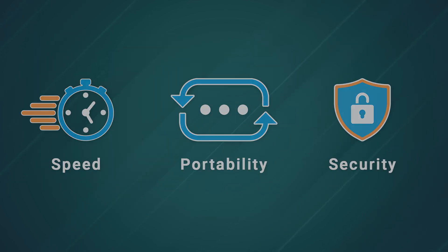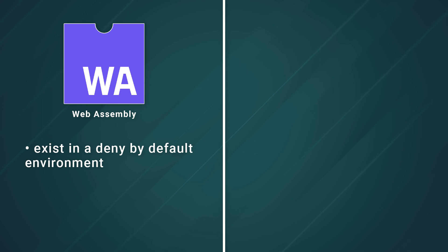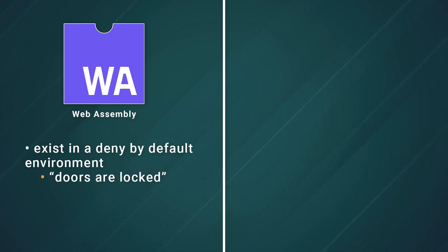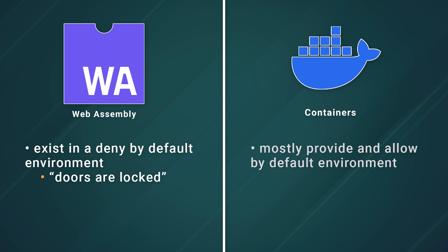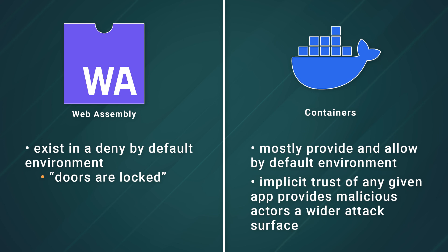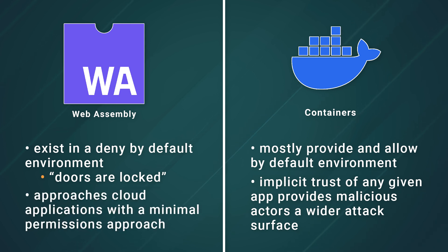Next is security. WebAssembly applications exist in a deny-by-default environment, sandboxed from the wider system and other applications. The doors are locked, and each door is only unlocked when access is explicitly granted. This differs greatly from the security model of containerized environments. While Docker and other solutions are highly secure, they mostly provide an allow-by-default environment. This implicit trust of any given app provides malicious actors a wider attack surface to start from. The WebAssembly sandbox, by contrast, approaches cloud applications with a minimal permissions approach, making things more secure by default.